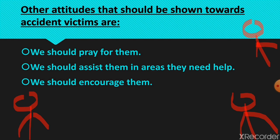What are the other attitudes that should be shown towards accident victims? We should pray for them — put them in your prayers, pray for them to get better, to get healed, to recover quickly. We should also assist them in areas they need help. If the person needs financial help and you are capable, help out. If the person needs shelter or food and you are capable, please do help out. Ask the accident victim what areas you can help them.